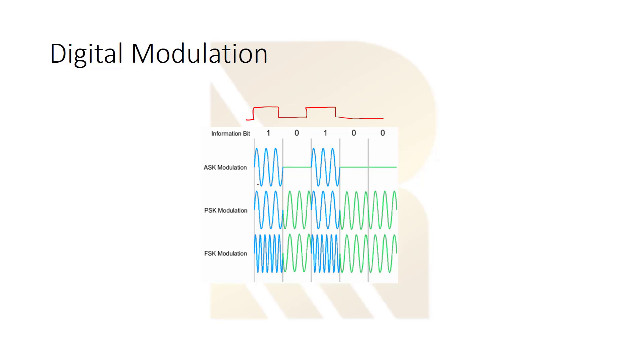This is ASK modulation. You can imagine it as a switch. When it's 1, our switch connects the carrier to output. When it's 0, our switch is open, so we don't have anything. This is ASK modulation.